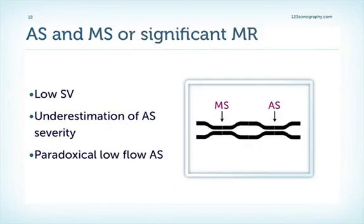Another interesting situation is when the patient has aortic stenosis and severe mitral stenosis or mitral regurgitation. When a patient has severe mitral disease, this can lead to low flow and low stroke volume. And when we have a low flow over the stenotic aortic valve, we will have an underestimation of severity due to low aortic gradients. This again is an example of paradoxical low flow aortic stenosis.